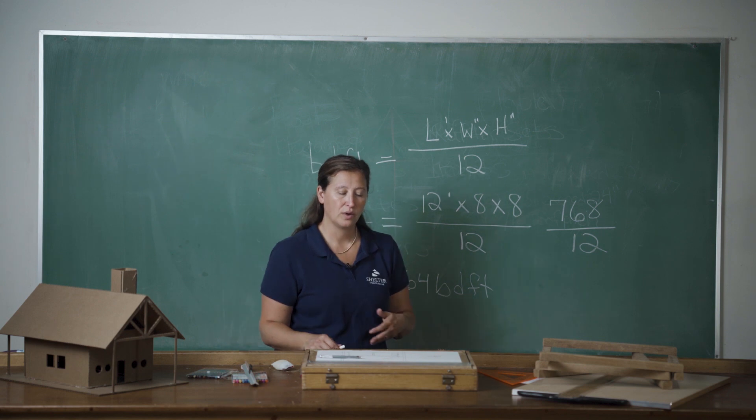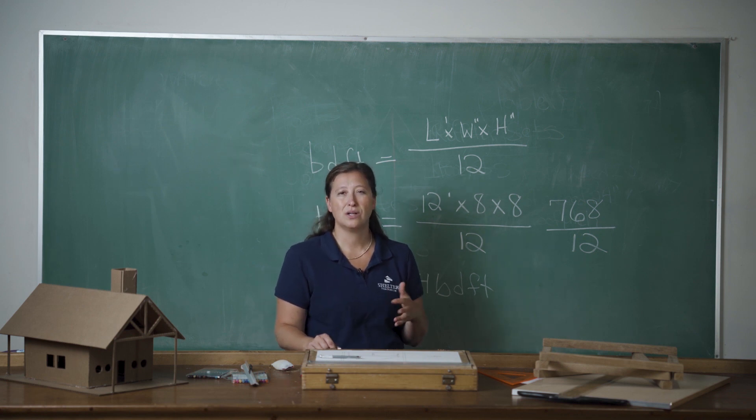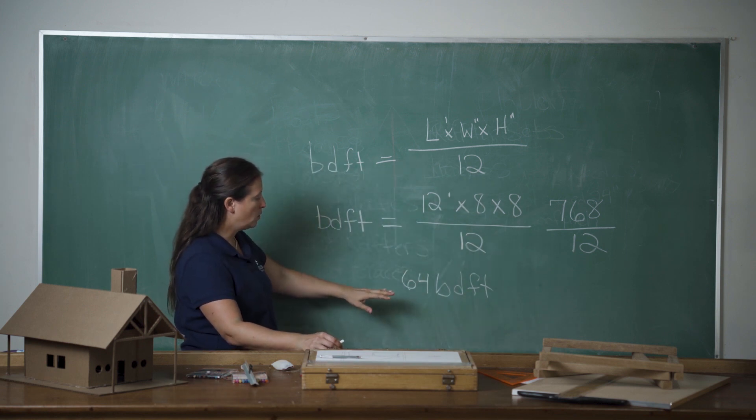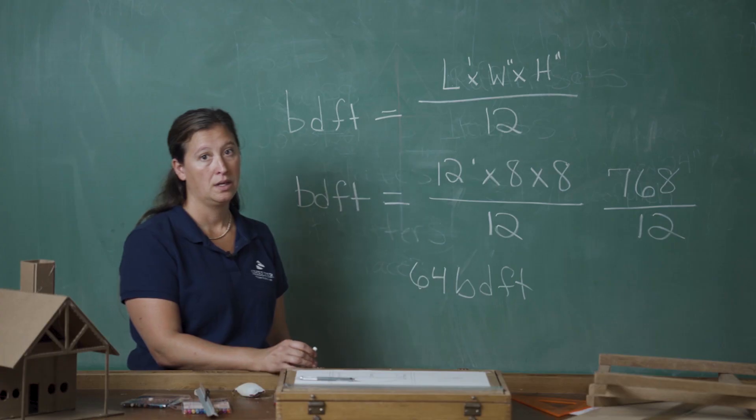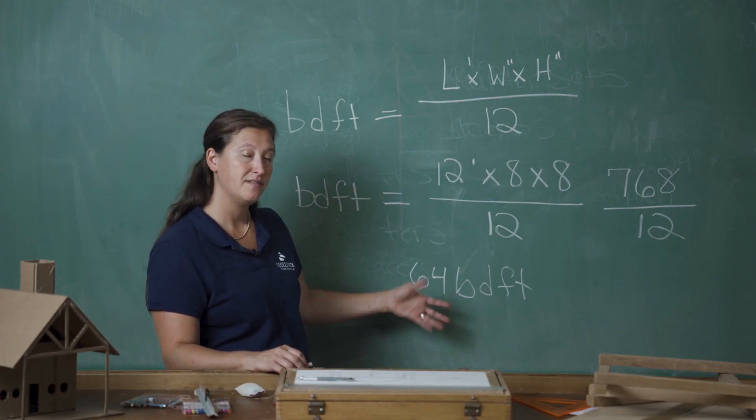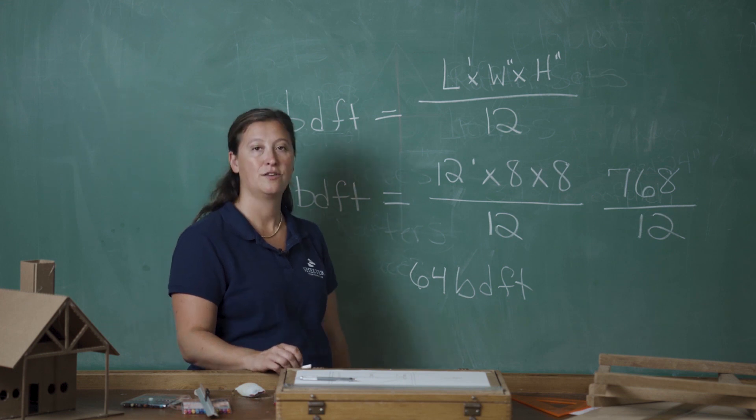But generally speaking, if we're getting a really high end pine or hemlock that is native to our area, then the pricing is around $1.20 a board foot. So we would take $1.20 and multiply by 64. And so our pricing at $1.20 is $76.80 for that beam.